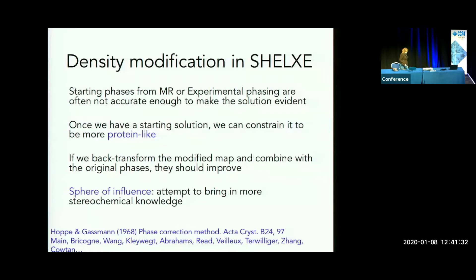In crystallography, when you start from phases from molecular replacement or experimental phasing, they are often not accurate enough and you can improve them as part of the phasing process. You make the starting solution look more protein-like. Eleanor was showing some cases, especially from experimental phasing, which is good because I will be showing more things that start from models, and that explains why we have gone in this direction in Shell XE.